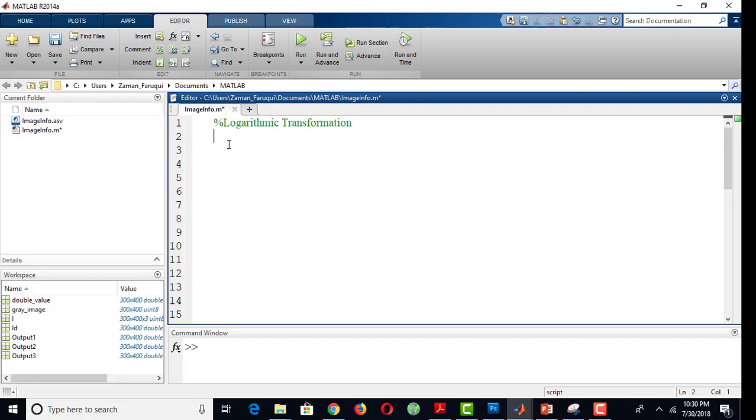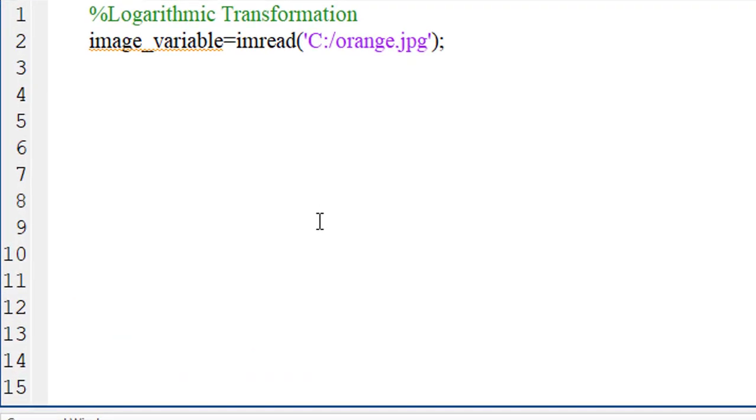To do that, let's load an image first and convert this image into a grayscale image so that we can understand the effect of logarithmic transformation easily.